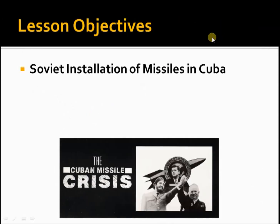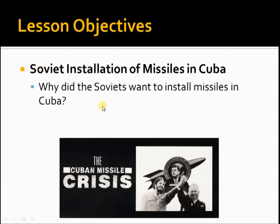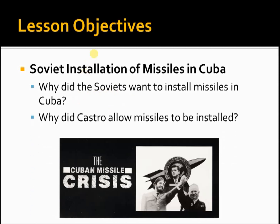So what will we be covering in today's lesson? We'll be looking at what led to the installation of missiles in Cuba by the Soviet Union — why was it that the Soviets wanted to install missiles in Cuba? This is with the knowledge of the worsening tensions between the USA and Cuba. Additionally, because these missiles were in Cuba — which is not Soviet territory but the territory of a Soviet ally — why did Castro, who had a final say, allow missiles to be installed on Cuban soil? Installing another country's weapons in your territory is definitely a very big deal — it's not a decision to be taken lightly.